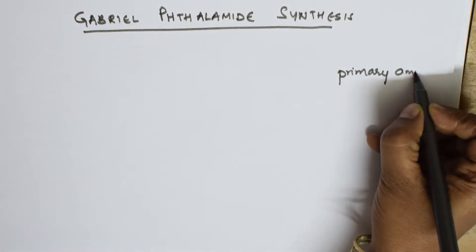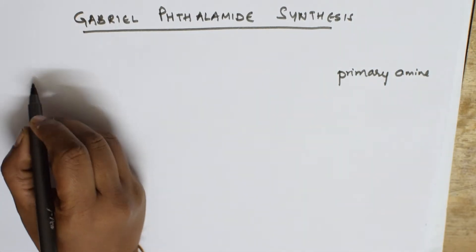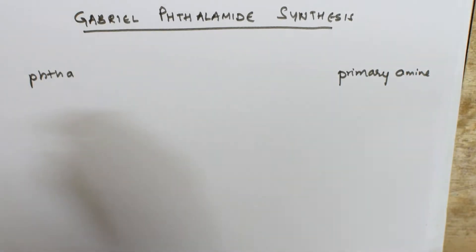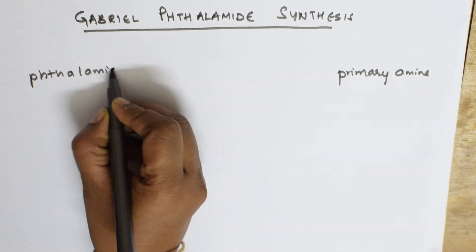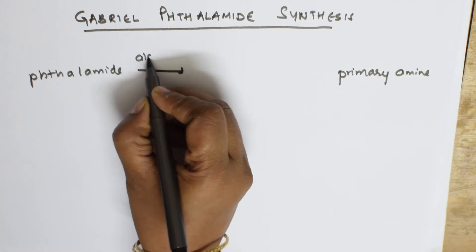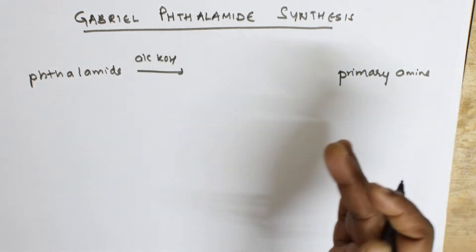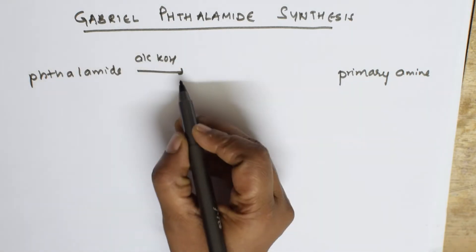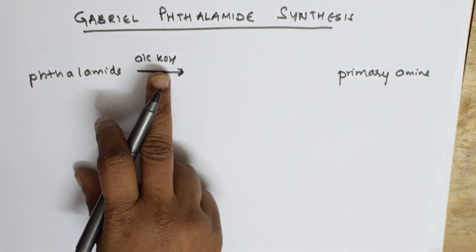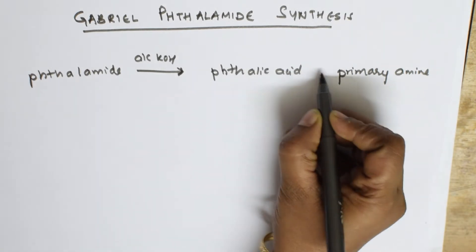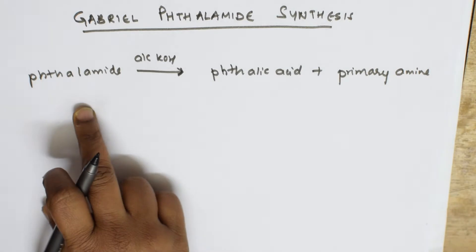Gabriel phthalimide synthesis is used for the synthesis of primary amine. The basic reactant which we are going to take is phthalimide in the presence of alcoholic KOH. After this there is a series of steps — basically it is going to form potassium salt, then we take ethyl phthalimide and convert. Directly summarizing: phthalimide in the presence of alcoholic KOH gets converted into phthalic acid as well as primary amine.